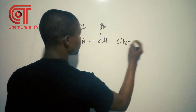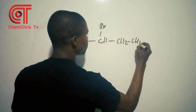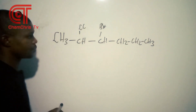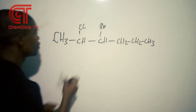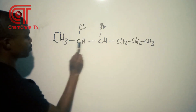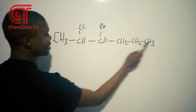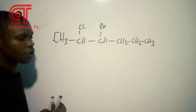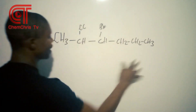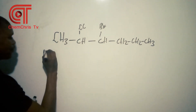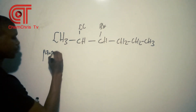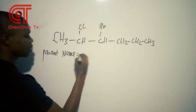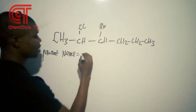Let's consider this example: CH2, CH, CH2, CH2, CH2, CH2. Counting the main chain from end to end gives 1, 2, 3, 4, 5, 6 — six carbons — so the parent name is hexane.